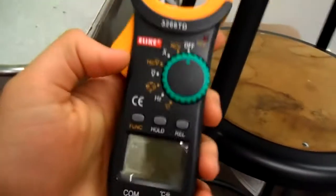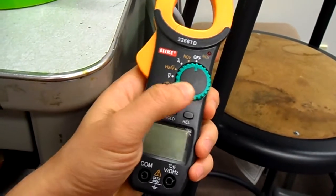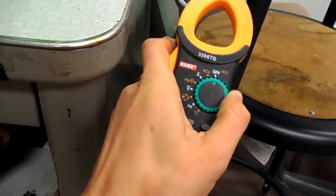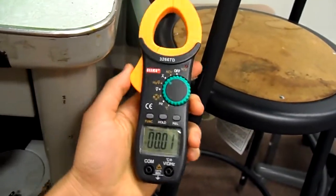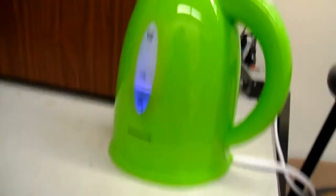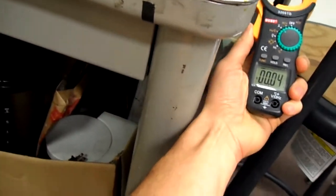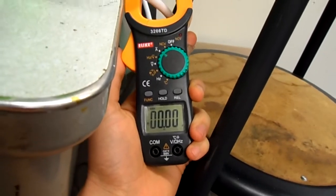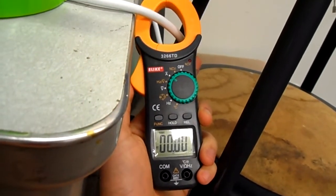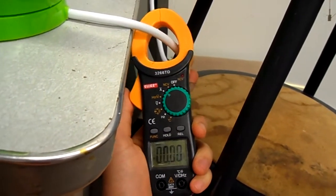So in the previous video, I showed that if you take this amp clamp and set it to amp clamp measurement mode, and this kettle is turned on, if you take this measurement around the power cord, you get nothing. So I said it wasn't working. Turns out it's working just fine.